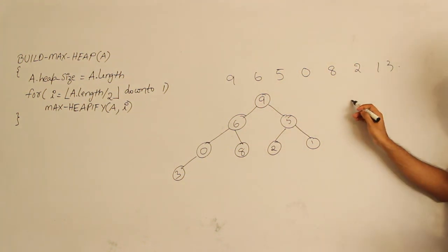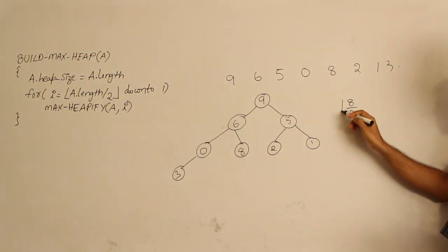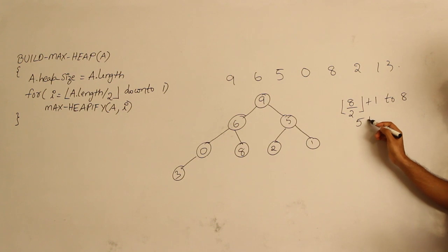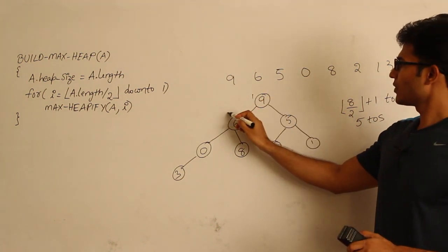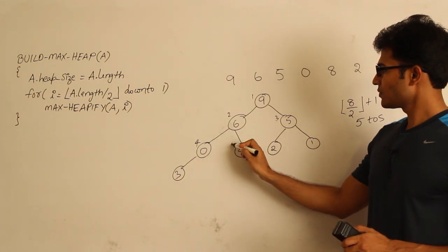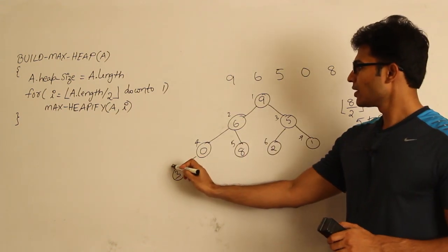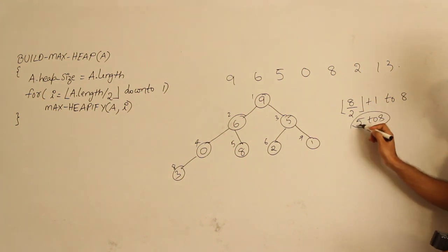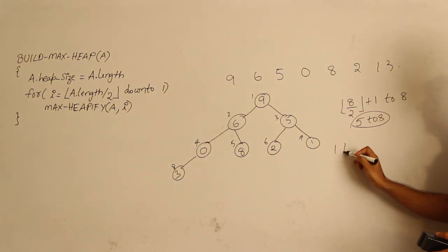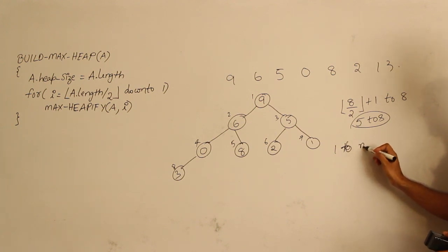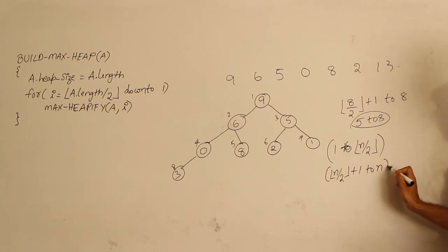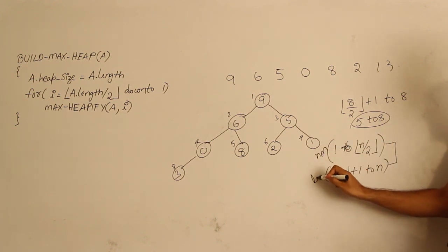With eight elements, the leaves run from index 5 to 8 — that is, 8/2 + 1 = 5 through 8. So leaves are at indices 5, 6, 7, 8. The non-leaves span indices 1 to n/2, and the leaves span n/2 + 1 to n.